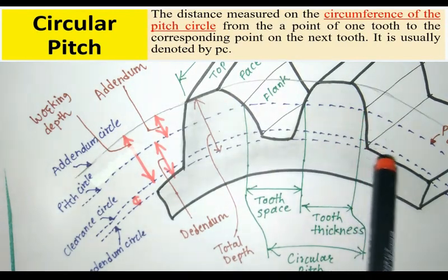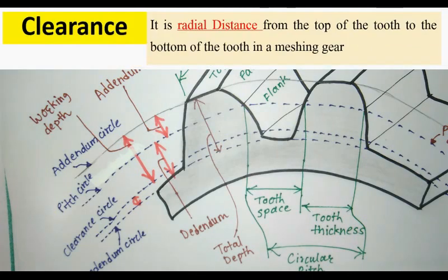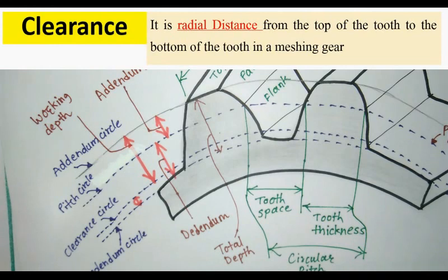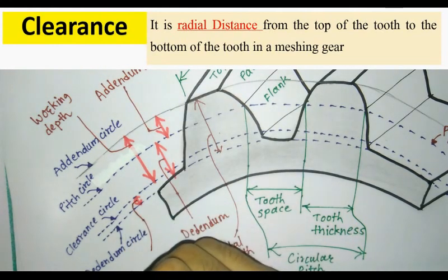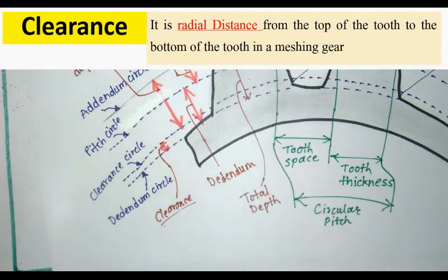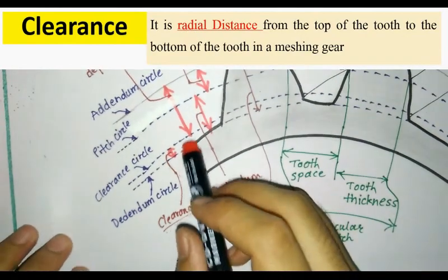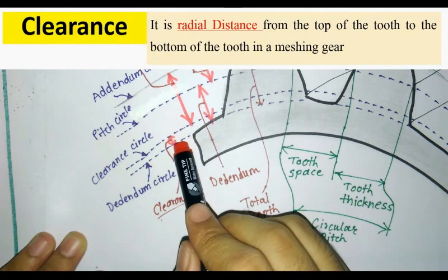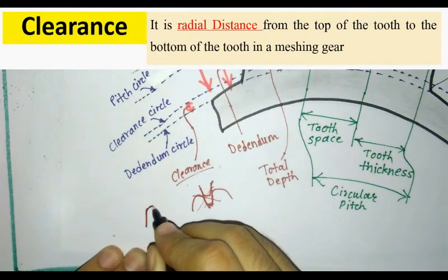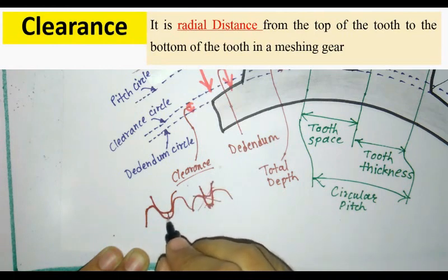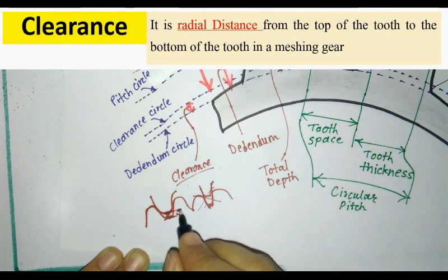Next one is clearance. Clearance is the radial distance from the top of tooth to the bottom of tooth in the mating gear when two gears are meshed together.